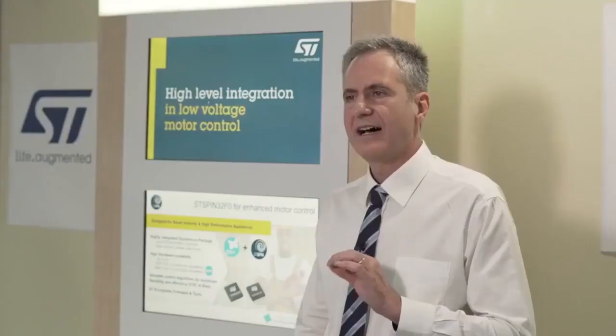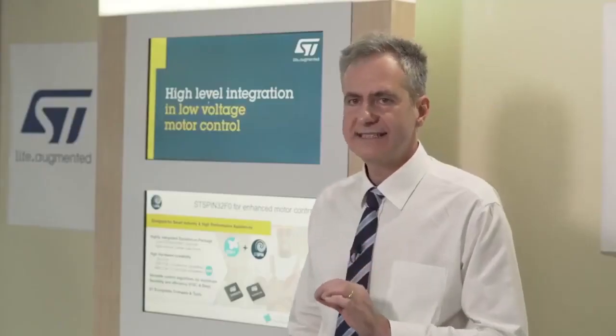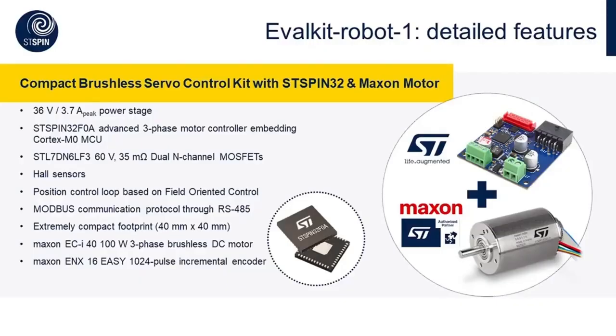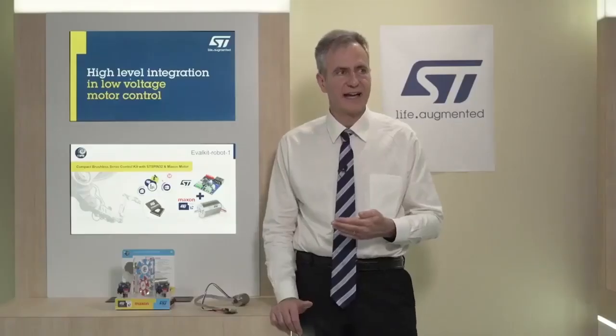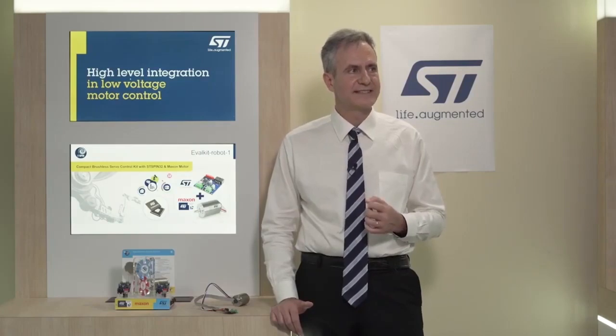The EvalKit Robot 1 is designed to operate up to 36V of supply and can provide up to 3.7A of peak current for the motor phases.